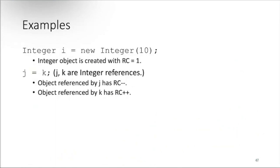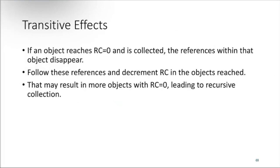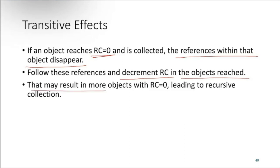For example: integer i = new Integer(10) creates an integer object with reference count 1. When j and k are integer references, the object referenced by j has its reference count decremented (rc--) and the object referenced by k has its reference count incremented (rc++). For transitive effects: if an object's reference count equals zero and it is collected, the references within that object disappear — follow those references and decrement the reference count of the objects reached, which may result in more objects with reference count zero, leading to recursive collection.